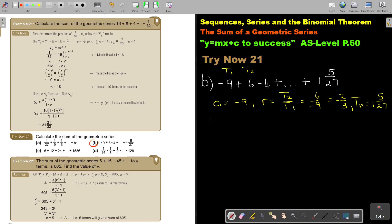So first use your TN. So TN equals A R^(N minus 1). So it's 1 and 5 over 27 equals negative 9. And the value of R is negative 2 over 3 to the N minus 1. So first isolate this by dividing both sides by negative 9. And then simplify this.